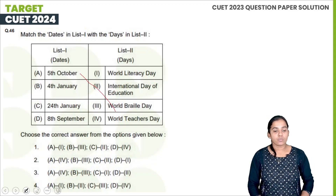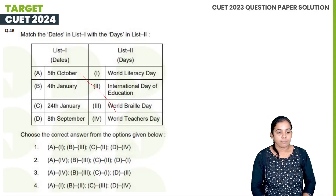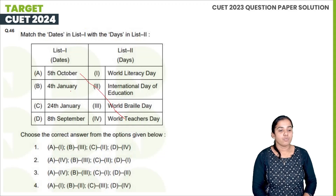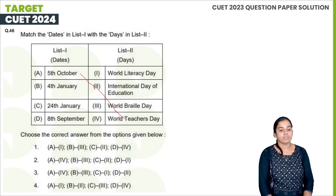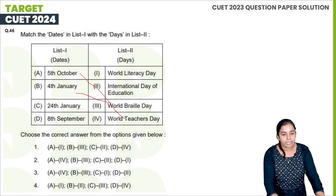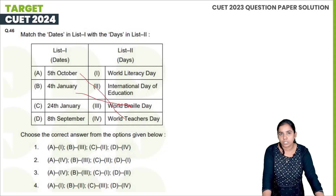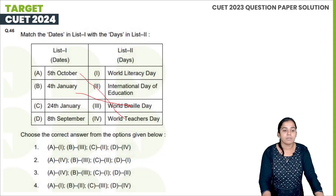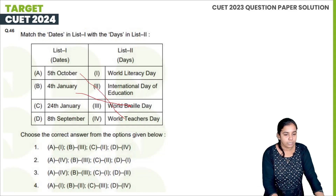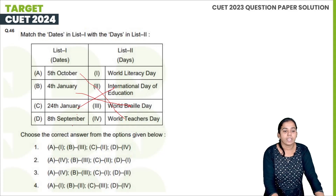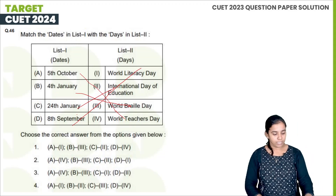To summarize: 5th October is World Teachers Day, 4th January is World Braille Day, 24th January is International Day of Education, and 8th September is World Literacy Day. Option B is the right answer.